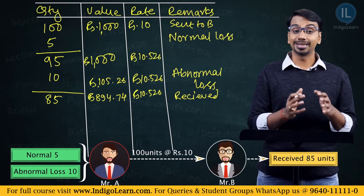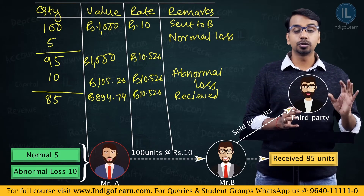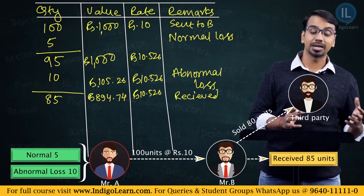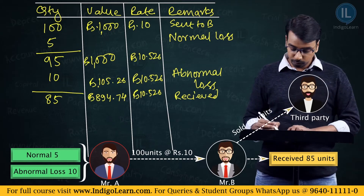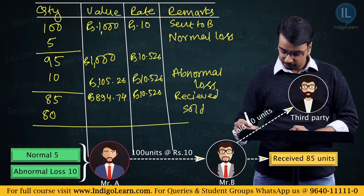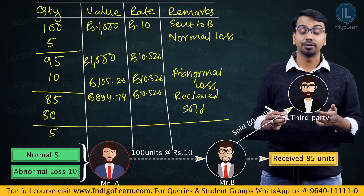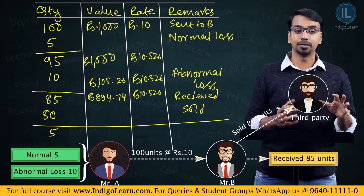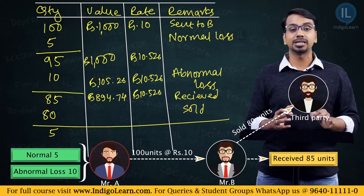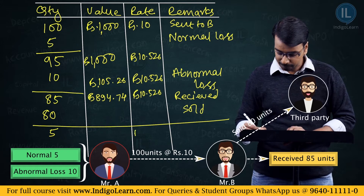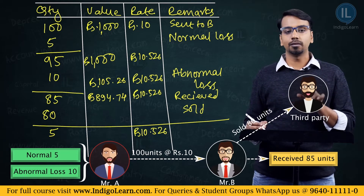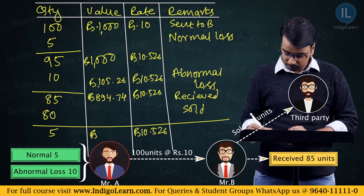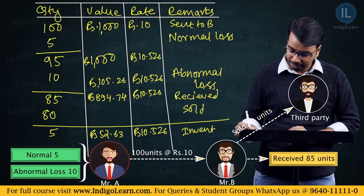Continuing the same example: the consignee Mr. B sold 80 goods to third parties. So 100 was sent, 5 was normal loss, 10 was abnormal loss, and 80 is sold — meaning he still has a closing inventory of 5 units. How should we value this closing inventory — at 5 × ₹10 or 5 × ₹10.526? Because normal loss should be considered as part of cost of inventory, we value these 5 units at rupees 10.526 each, giving a closing inventory value of rupees 52.63.